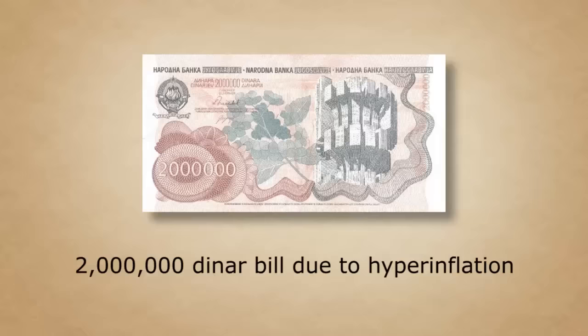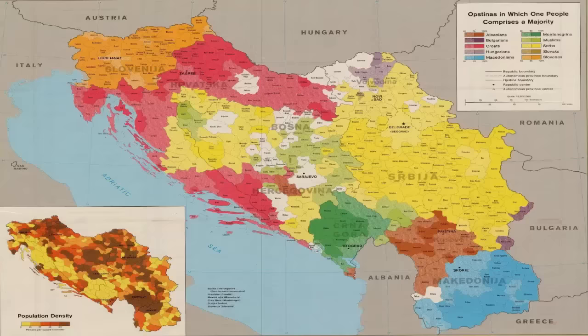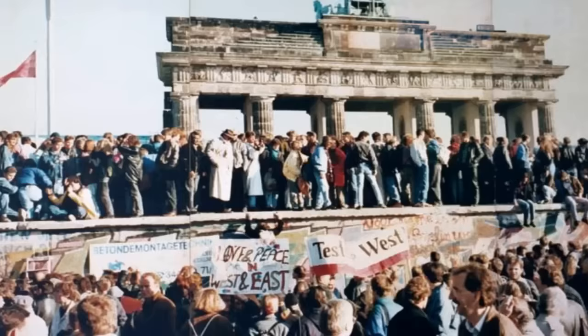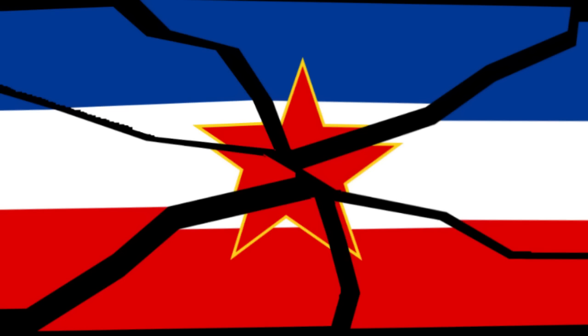During the 1980s, Yugoslavia's economy took a turn for the worse. Ethnic tensions began to rise, and nationalism began to grow in some of the individual republics. This, coupled with the fall of communism throughout the world, all contributed to what would become the Yugoslav Wars and the breakup of Yugoslavia.